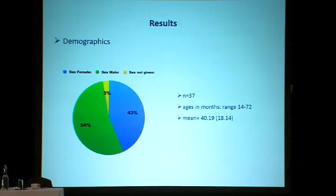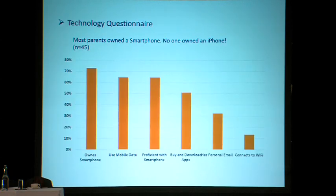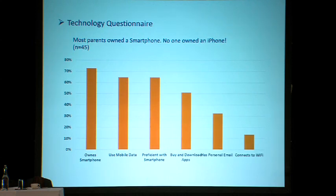In the end, 37 children met the inclusion criteria: 20 boys, 16 girls, and one where the parent did not tell us the sex. They were aged between 14 and 72 months with a mean age of 40 months. The technology questionnaire showed that most parents owned a smartphone — interestingly, none owned an iPhone. Most used mobile phone data to access the internet, at least half purchased and downloaded apps, and most felt they were pretty good at using their phones.